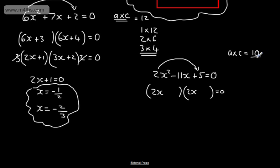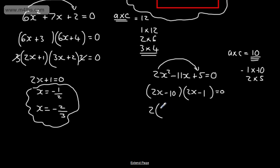1 times 10, 2 times 5. I'm going to choose 1 and 10, and they're both going to be negative. So in the brackets, I'm going to have negative 10 and negative 1. At this stage, I can take a common factor of 2 out of the first bracket, which leaves me X minus 5. The second bracket has no common factor, so I just rewrite it as 2X minus 1. That gives me 0, and I can now cancel the 2. If you're unsure, go ahead and multiply it out — you will get the original expression back.